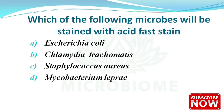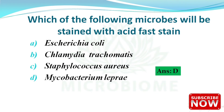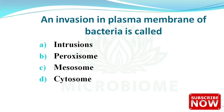Next: which of the following microbes will be stained with acid-fast stain? The options are Escherichia coli, Chlamydia trachomatis, Staphylococcus aureus, and Mycobacterium leprae. The right answer is option D — Mycobacterium leprae.